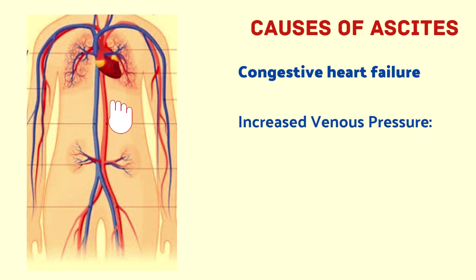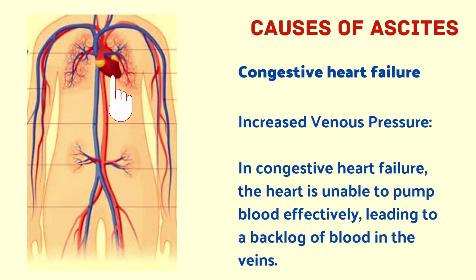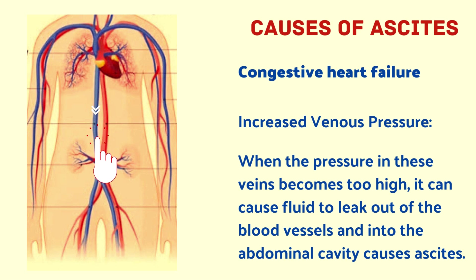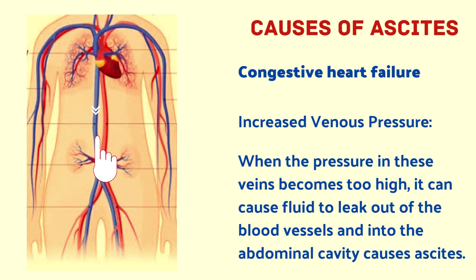The next cause is congestive heart failure. In congestive heart failure, the heart is unable to pump blood effectively, leading to a backlog of blood in the veins. This results in increased pressure in the veins that drain into the heart, such as the inferior vena cava. When the pressure in these veins becomes too high, fluid leaks out of the blood vessels and into the abdominal cavity, causing ascites.